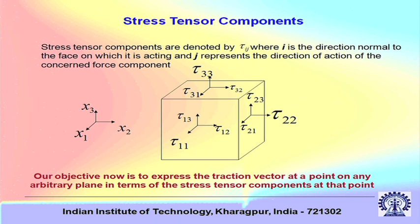The tau ij representation applies only to surfaces with normals along x1, x2, or x3. For an arbitrary surface whose normal is in an arbitrary direction, we cannot directly use this notation. Our objective is to express the traction vector at any point on an arbitrary plane in terms of the stress tensor components at that point.